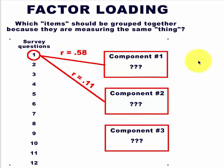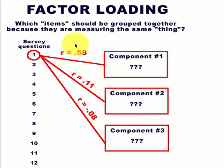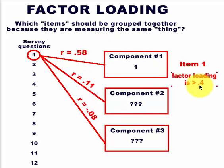The second correlation is 0.11 — nothing to write home about — and the third is -0.08. So there's no question that question number one belongs under component number one, because its loading factor is greater than 0.4. The loading factor is basically the correlation. So it's obvious with question number one.